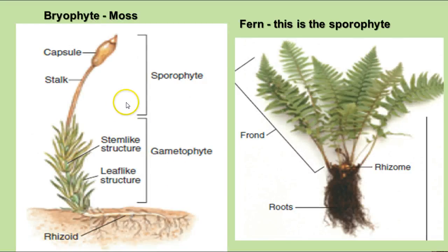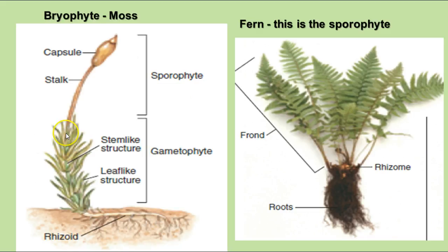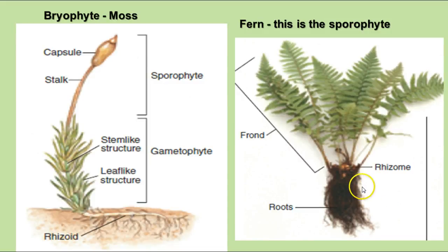These are the two types of plants that are not seed-bearing. In the bryophytes or mosses, the gametophyte is the dominant part of the life cycle — the most recognizable form — and the sporophyte grows out of the top of the gametophyte and is dependent upon it. In the fern, the recognizable form is the sporophyte. The gametophyte is a tiny structure about a quarter to a half an inch in diameter, with both male and female gametophytes on the same structure.